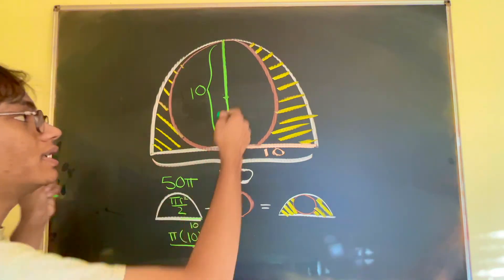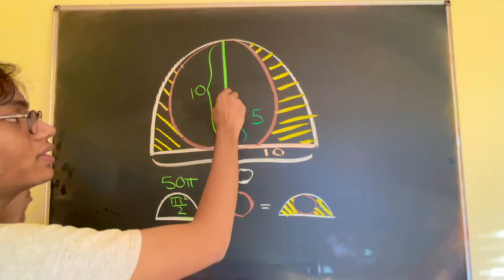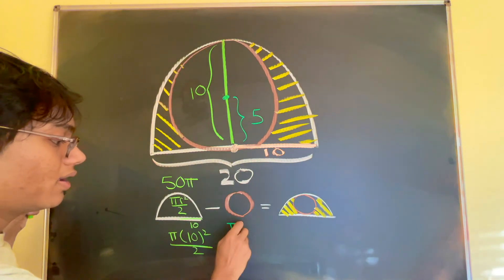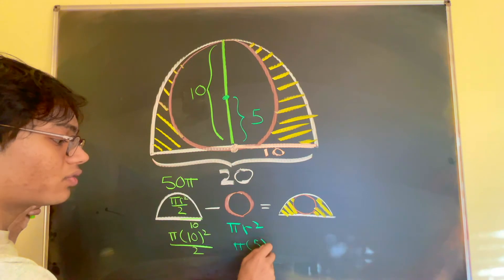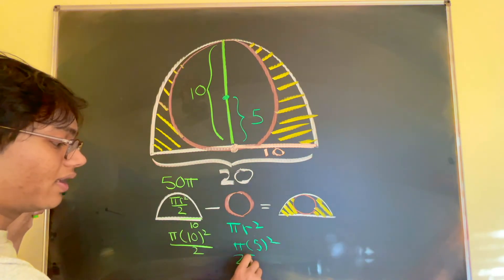We know what the radius is going to be. This radius right here, that's going to be 5. So this radius right here is 5. We know the area of that. The area of this is just going to be pi r squared. So pi times 5 squared which is just 25 pi. 25 pi.